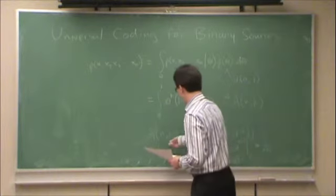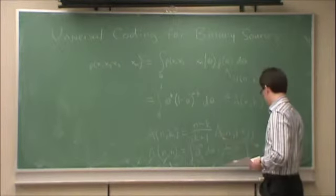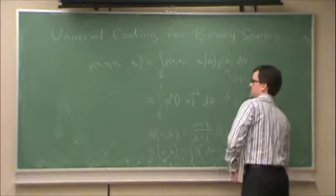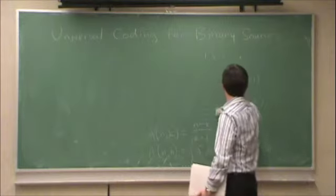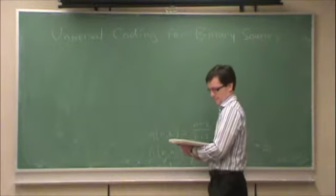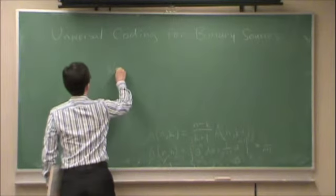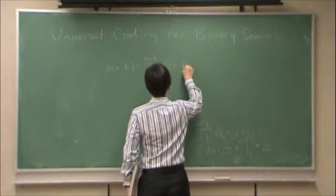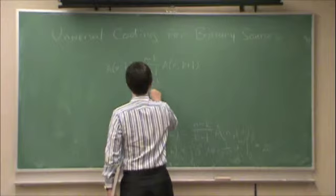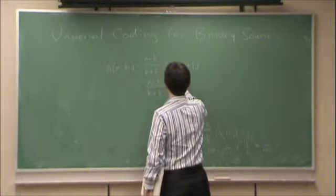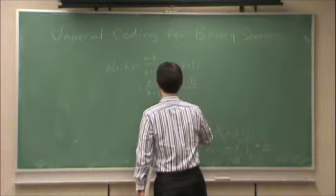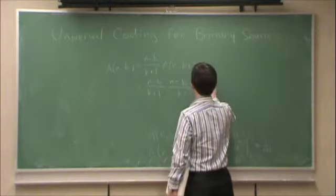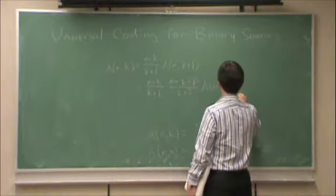So, basically we have this recursion from a_nk up to a_nn, and the last term in the recursion is 1 over n plus 1. So, what we will basically end up with is this. a_nk is equal to n minus k over k plus 1 times a_n,k+1.